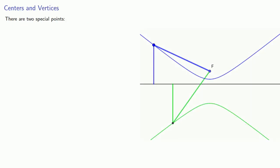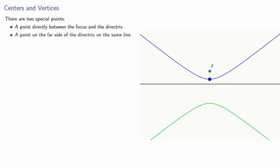There are two special points: a point directly between the focus and the directrix, and a point on the far side of the directrix on the same line. These are known as the vertices of the hyperbola, and the center will be the midpoint of the vertices.